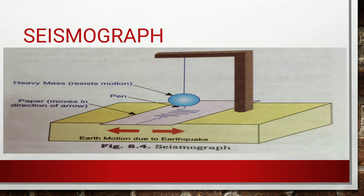A seismograph records the direction of movement of waves and their passage at a particular point. It has a pen attached to it, and due to the vibration of the earth, the pen vibrates with the earthquake waves, recording their movements on a traveling strip of paper.